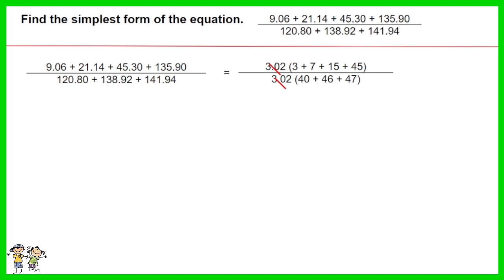The numerator is now equals 3 plus 7 plus 15 plus 45 equals 70. The denominator is now equals 40 plus 46 plus 47 equals 133.